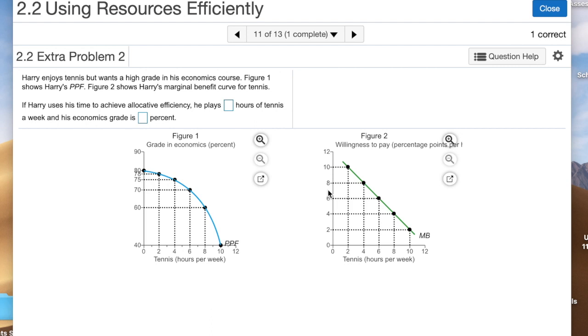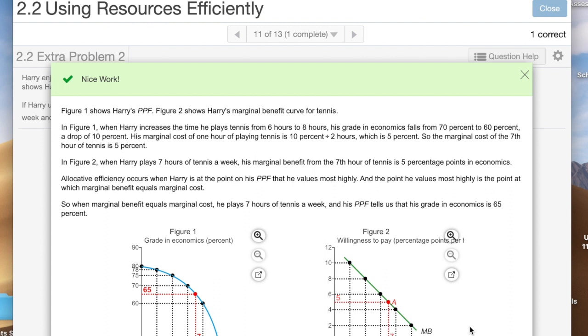Let's look at seven. Seven would put us here at a marginal benefit of five. Then we are going to look over here where we went from six to eight. Our grade dropped from seventy to sixty, a difference of ten percent. Divided that in half, we get five. Our marginal cost is five, our marginal benefit is five. So Harry uses his time to achieve allocative efficiency playing seven hours of tennis. If he does, what is his economics grade? Well, again, it's that midpoint between six and eight hours, so it's a sixty-five percent grade.